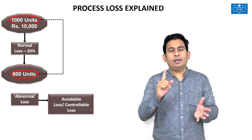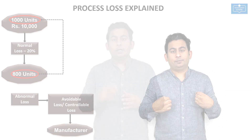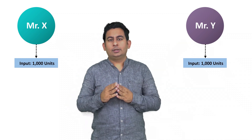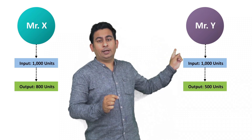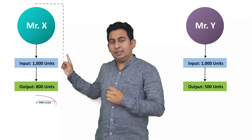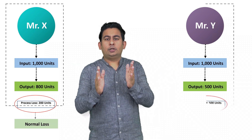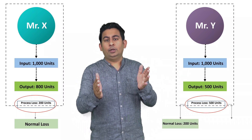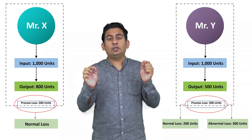What about abnormal loss? Abnormal loss is an avoidable, controllable loss. Can we pass on the abnormal loss to the customer? No — they will not be ready to bear it; abnormal loss has to be borne by the manufacturer. Take the example of Mr. X and Mr. Y: X introduces 1000 units and gets 800 units output; Y also introduces 1000 units but gets only 500 units output. Mr. X has 200 units normal loss; Mr. Y has 500 units total loss — 200 units normal loss and 300 units abnormal loss.